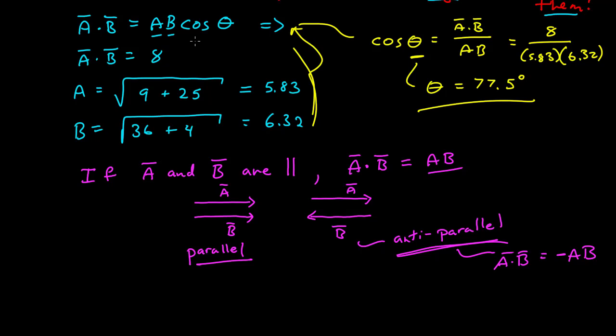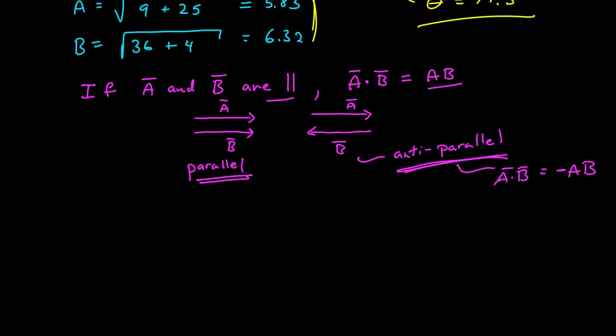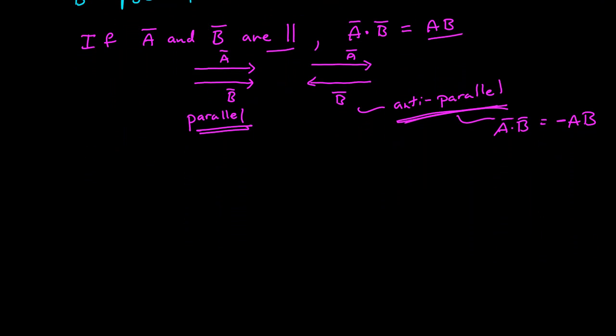You can see that directly from our geometric definition of the dot product. If they're parallel, theta is zero and cosine is one. If they're anti-parallel, theta is 180 degrees and cosine theta is negative one. But there's no reason to go through that computation each time — it's better just to remember that if they're parallel, the dot product is equal to the product of their magnitudes.